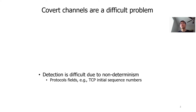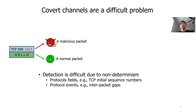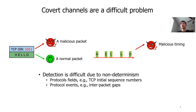First, critical fields are non-deterministic. For example, given a TCP initial sequence number, it could be a field modified by the attacker, or it could be a field of a normal packet. But there is no good way to decide which is true because the TCP initial sequence number is almost random. Besides, protocol events are non-deterministic. The timing pattern of packets could be controlled by the attacker, and it also could be caused by normal network variation.